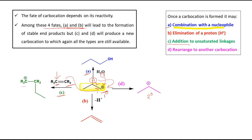An important point: among these four fates, the first two — combination with a nucleophile (blue) and elimination of a proton (red) — lead to the formation of stable, neutral end products. However, processes C and D — addition to an unsaturated linkage and rearrangement — produce a new carbocation, to which all four types of possibilities are still available again.